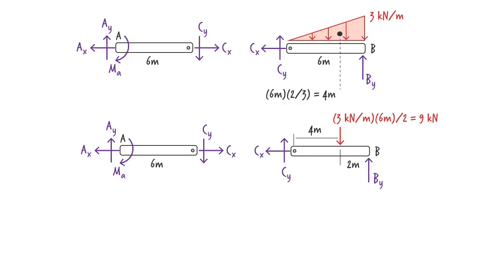We have a total of six unknown forces here. There are three unknowns at A, two at C, and one at B.